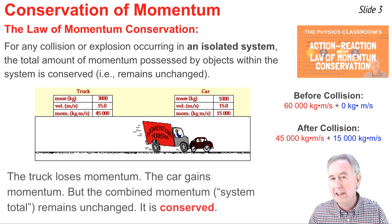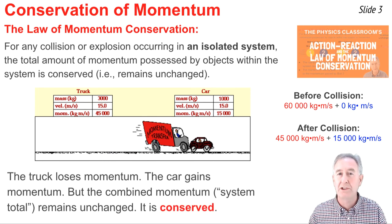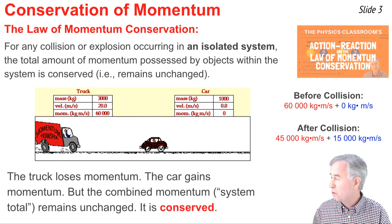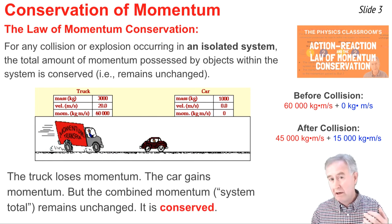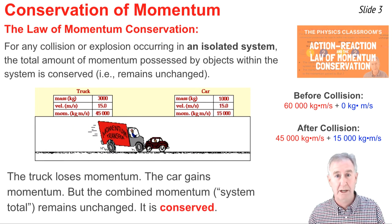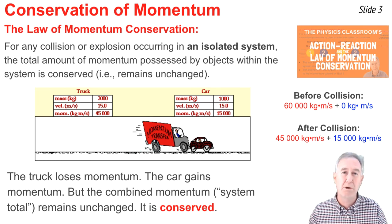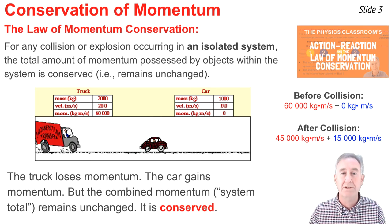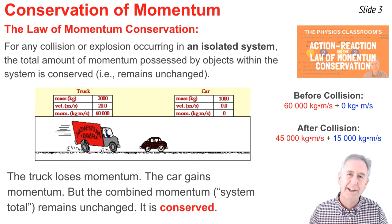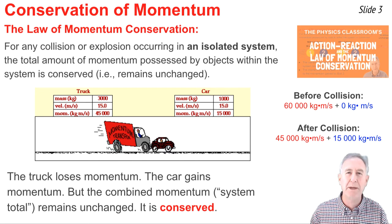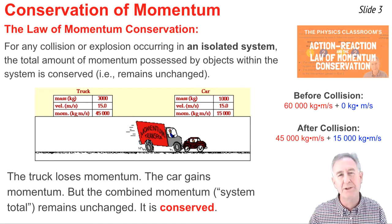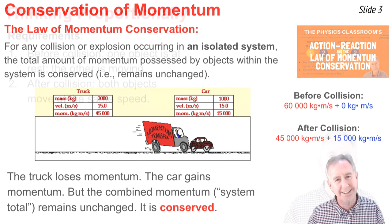We can say that in this collision, the truck loses momentum and the car gains momentum, but the total or combined momentum of these two objects remains unchanged. That's what we mean by momentum being conserved in a collision.